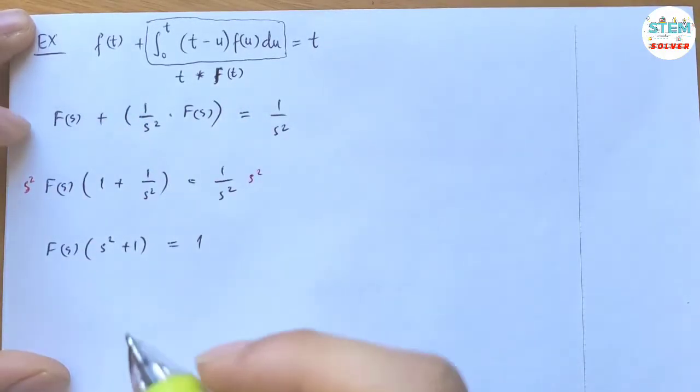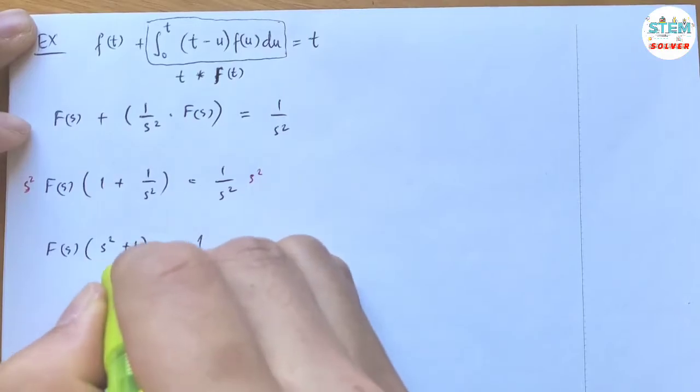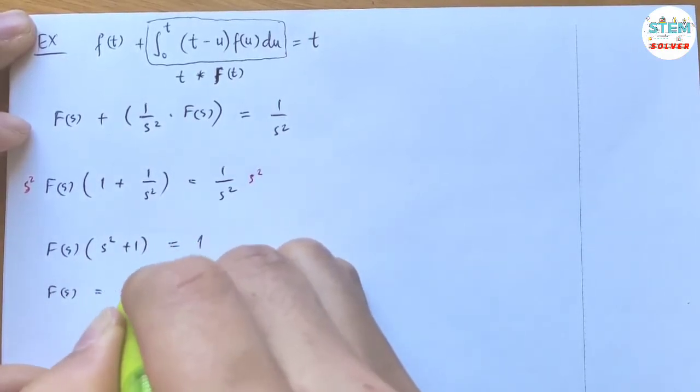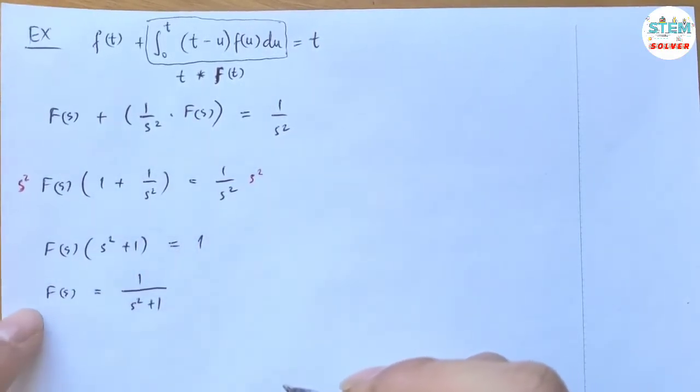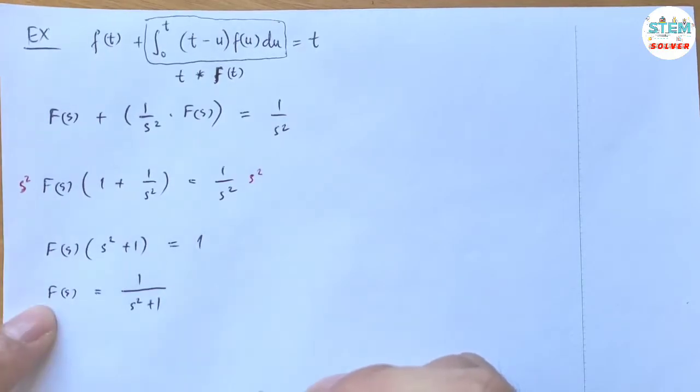Just a little note here. Now divide both sides by s squared plus 1. So this is the inverse function of capital F(s).